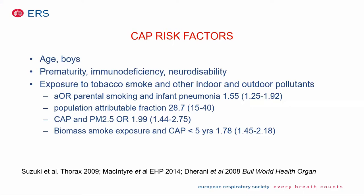Except for age, there are several other risk factors like prematurity and children with immune deficiencies, and we all know children with neurodisability who come to the ward with pneumonia. There are also preventable risk factors like exposure to tobacco smoke and indoor and outdoor pollution. The risk for infant pneumonia when parents are smoking is around 1.5 to 2 times higher, with a population attributable fraction of around 30%. In low- and middle-income countries, biomass smoke exposure is an important risk factor with an adjusted odds ratio of almost 2.